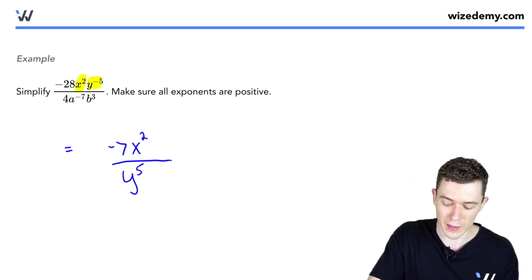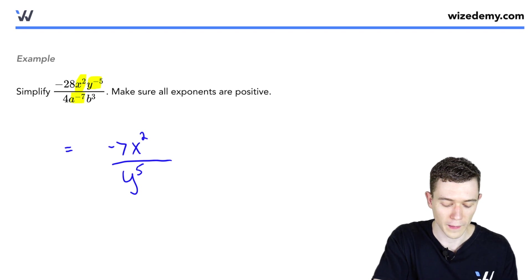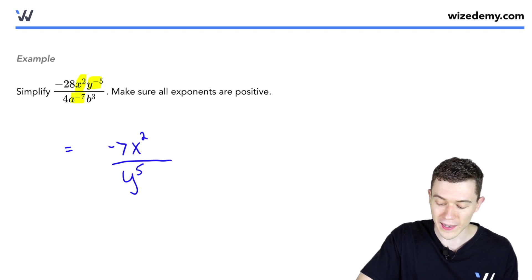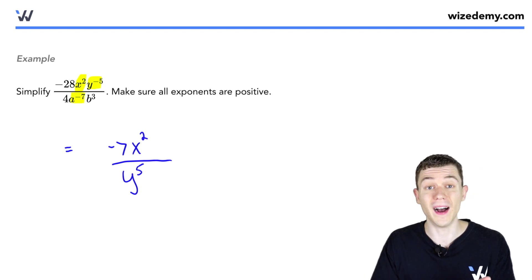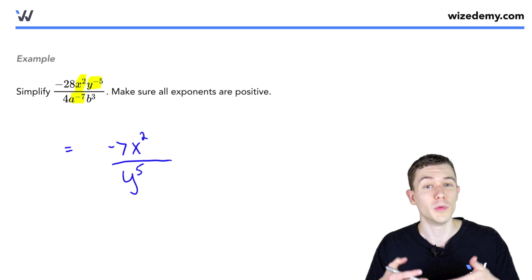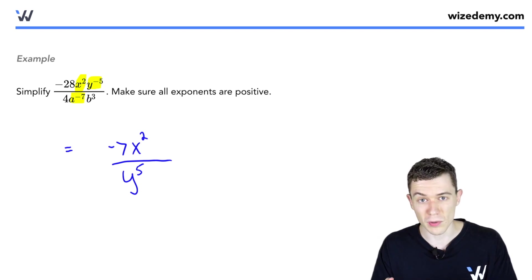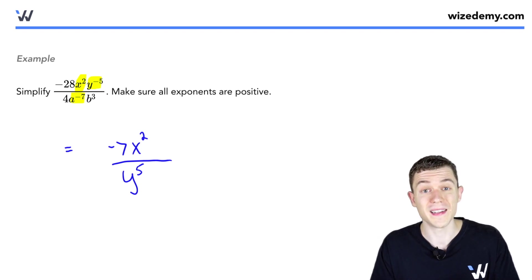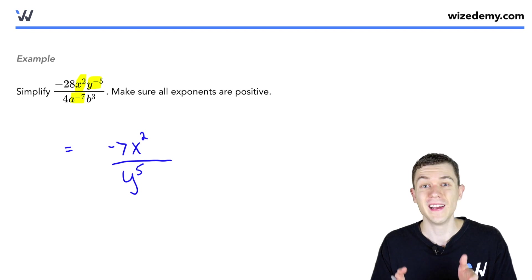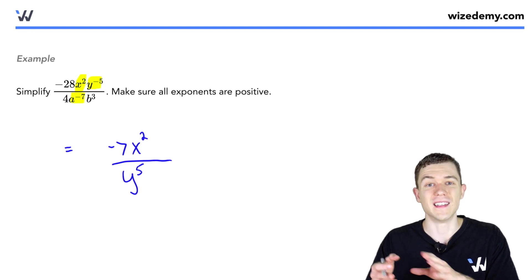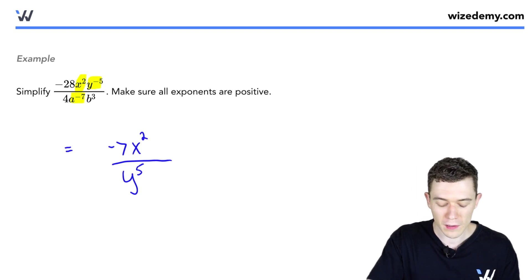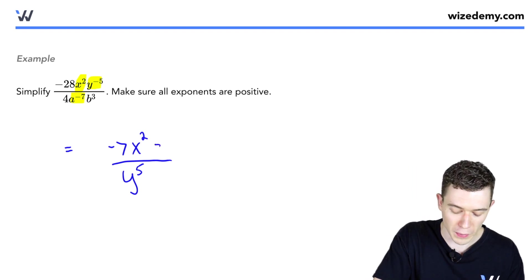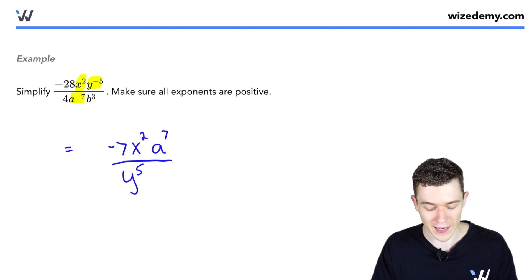Looking in the denominator, we already dealt with the 4. But a to the negative 7th is another negative exponent — we can do the same sort of thing. It becomes 1 over a to the 7th in the denominator. In effect, negative exponents in the denominator can be written as positive exponents in the numerator, so a to the 7th goes upstairs.